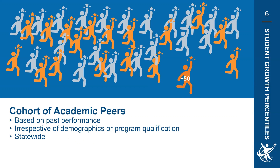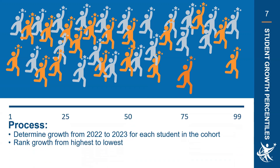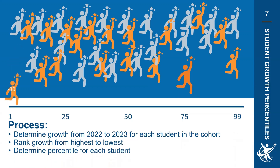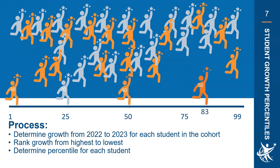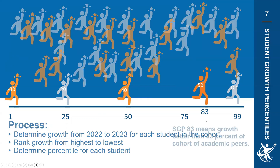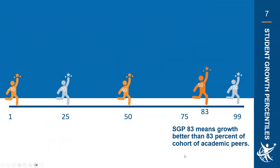We determine the amount of growth for all students in the cohort — who may not have scored exactly 2490 but are statistically similar — and rank their growth from highest to lowest to determine a percentile for each student. Our sample student's gain of 50 points places them in the 83rd percentile of their academic peers cohort. Note that every cohort is different: that same 50-point gain might represent only the 43rd percentile in a different cohort. The 83rd percentile means the student's growth was better than 83% of students in their cohort.